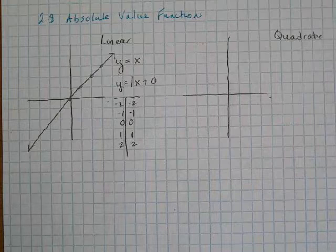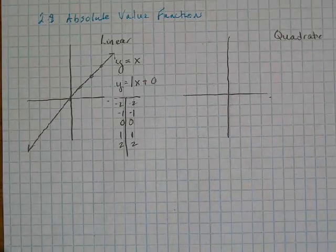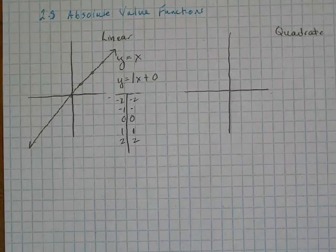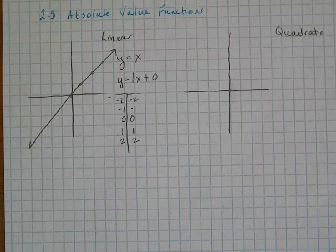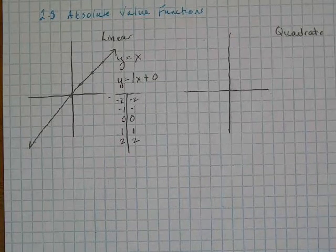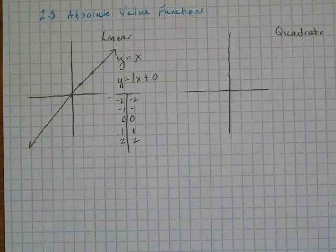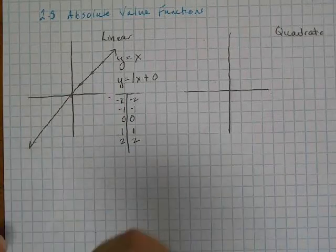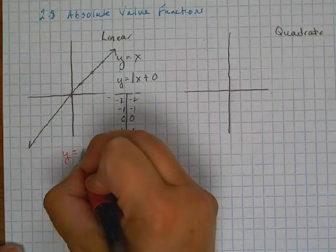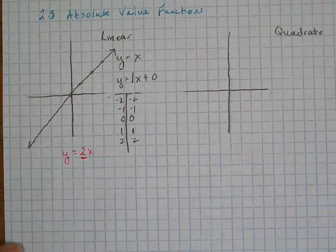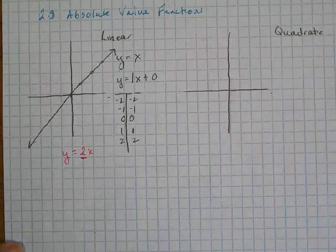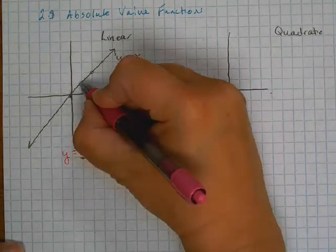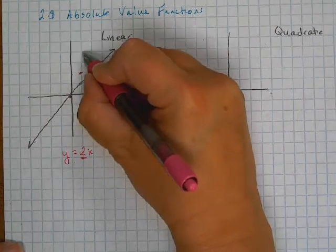In Algebra 1, you started changing things around a bit. You would do some different things to this x that would maybe change your graph a little bit. Let's start by just looking at what would happen if instead of having y equals x, I graphed y equals 2x. What happens when I put a number right here in front of the x? Well, what that does is actually changes the slope. You begin at 0, but instead of going up 1 over 1, you go up 2 over 1.